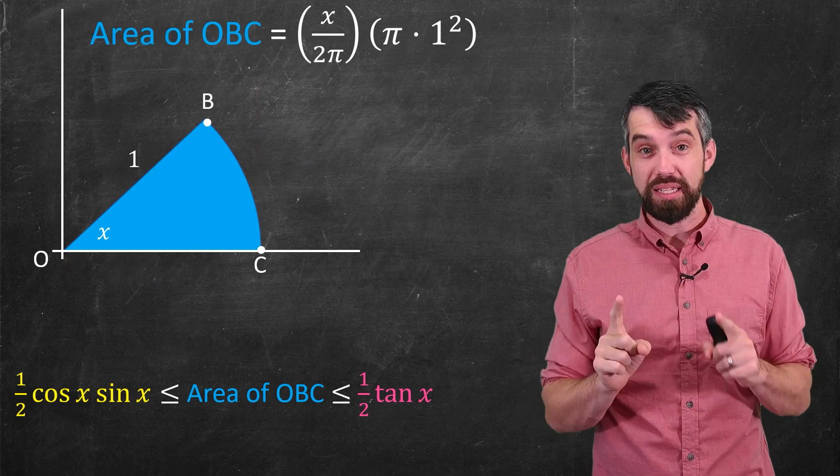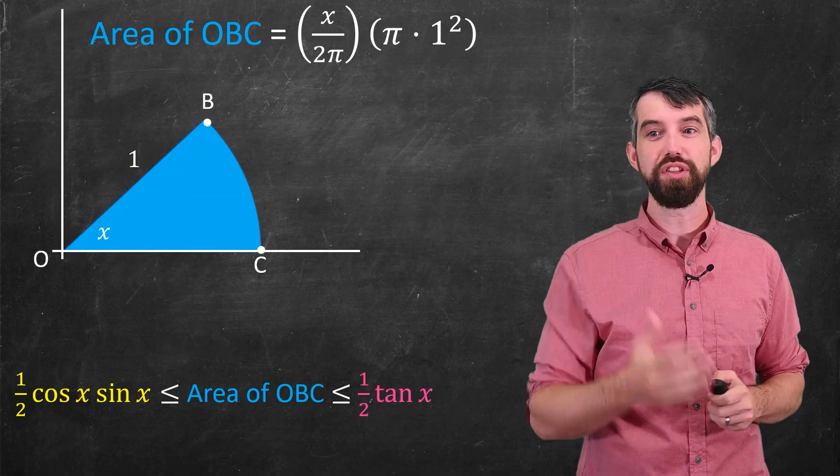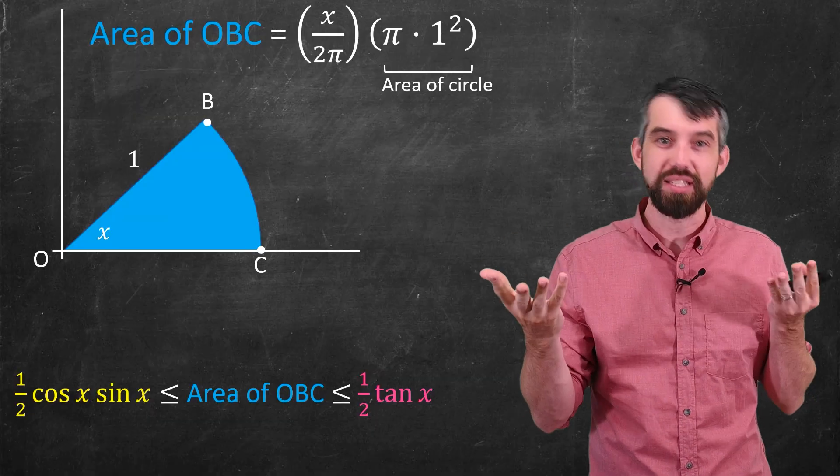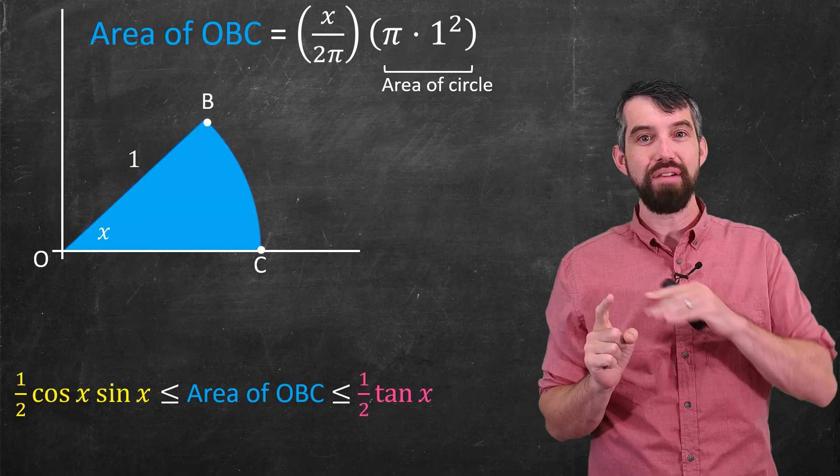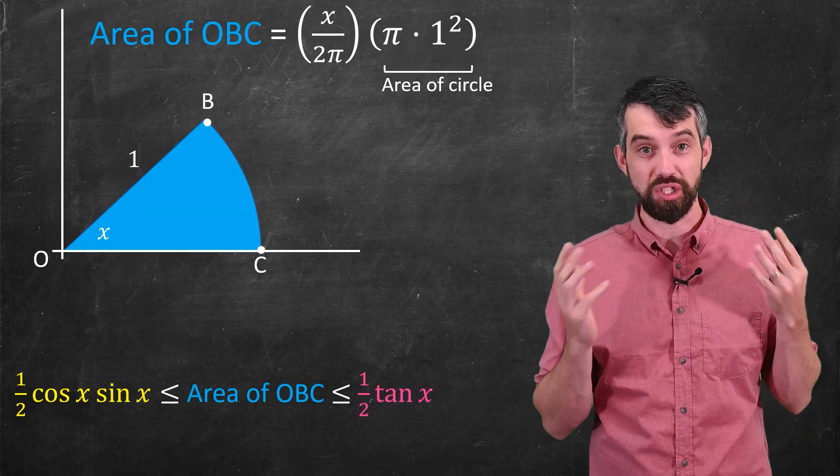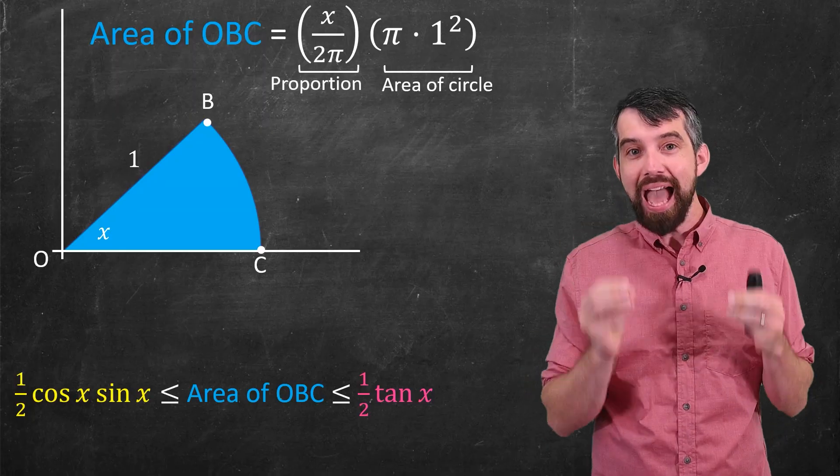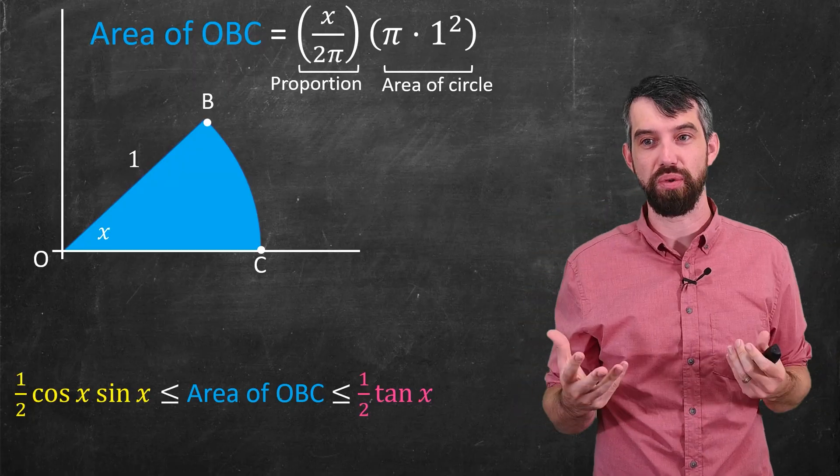The area of that pizza slice I'm going to claim is the product of two things. It's the product of the total area of a total circle pi r squared. In this case the radius is 1, so pi 1 squared. But because I don't have the entire 2 pi radians of my circle, I only have a proportion of that x, I have to multiply this by x divided by 2 pi. This is going to give me the proportion of the circle that I have.